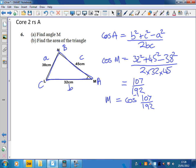number. Now we want the answer in degrees, so make sure your calculator is in degrees mode and you'll find that M is 56.1 degrees. Now this is going to help us for part b, which wants us to find the